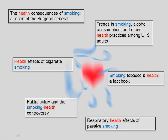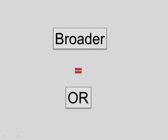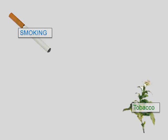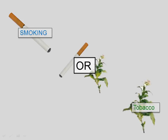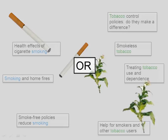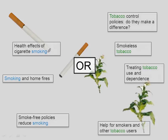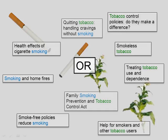However, if you want to broaden a search, use OR. For example, smoking OR tobacco gets records with either or both terms. This search will retrieve more records and is a broader search.